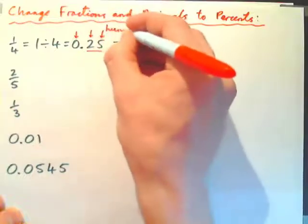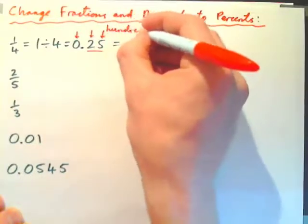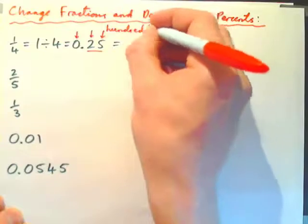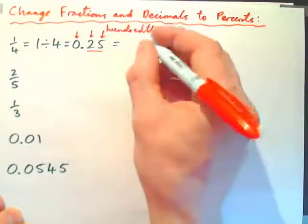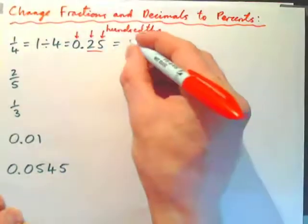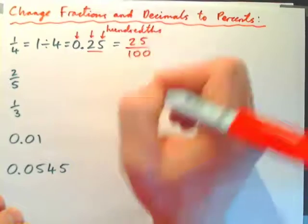And if we put these both together, that makes twenty-five hundredths. So we have twenty-five hundredths, or in other words, twenty-five hundredths like that.